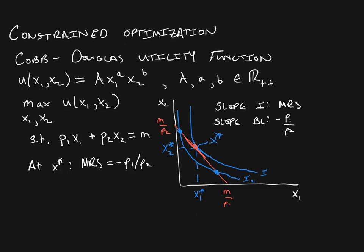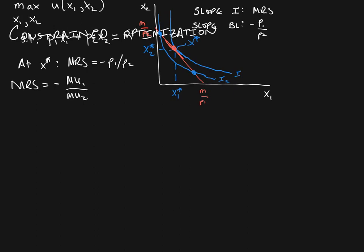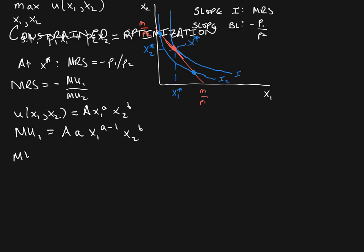We can use that fact to find the optimal consumption bundle. To do that, we need to calculate the marginal rate of substitution. Remember, the MRS is equal to the negative of the marginal utility of good 1 divided by the marginal utility of good 2. Our marginal utility of good 1 is the derivative of our utility function U = A·x1^a·x2^B with respect to x1, giving us A·a·x1^(a−1)·x2^B. And the marginal utility of good 2 is A·b·x1^a·x2^(B−1).